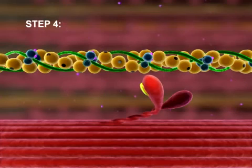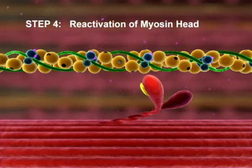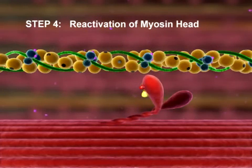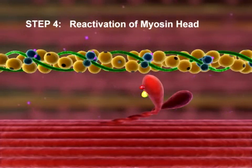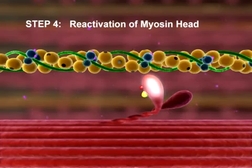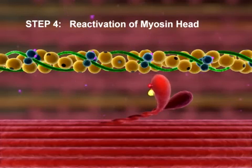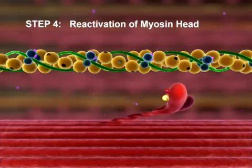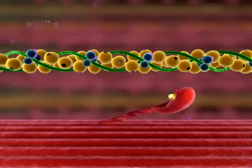Step 4: Reactivation of the myosin head. ATP is hydrolyzed to ADP and inorganic phosphate. The energy released during hydrolysis reactivates the myosin head, returning it to the cocked position.